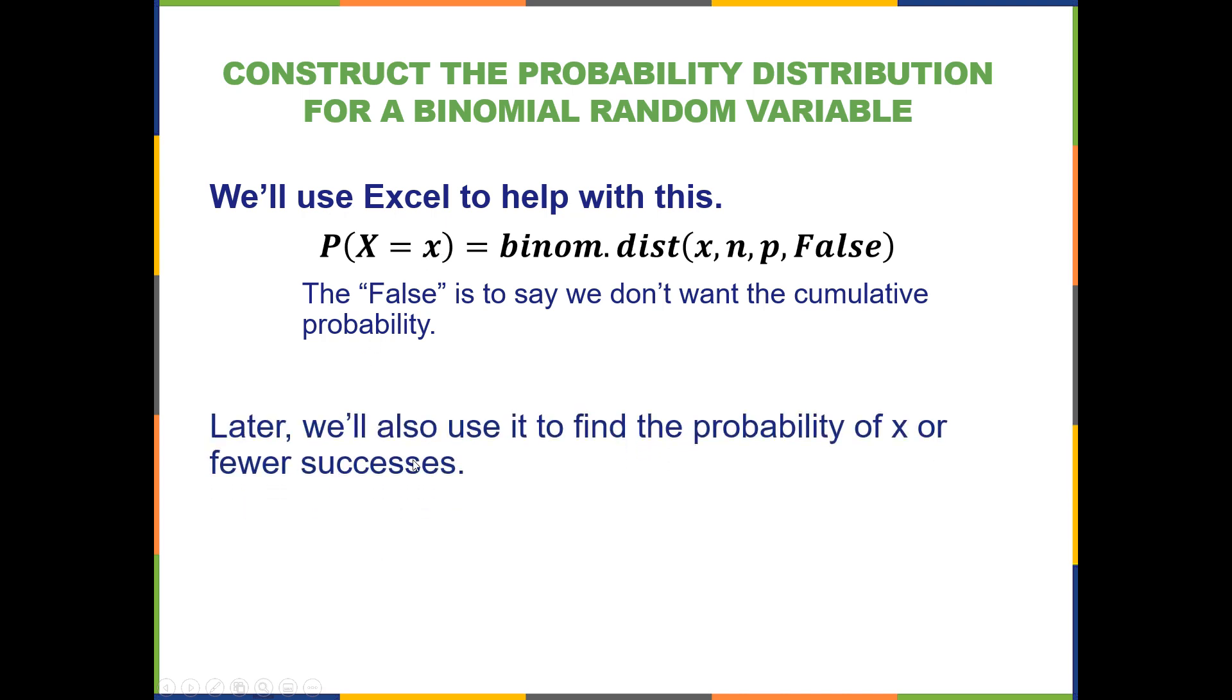Later, we'll also use it to find the probability of X or fewer successes. The only difference here is that we're saying it's the random variable taking on any value that is equal to or less than the value specified, and all we have to do to change from an exact number of successes is just tell it true for cumulative.